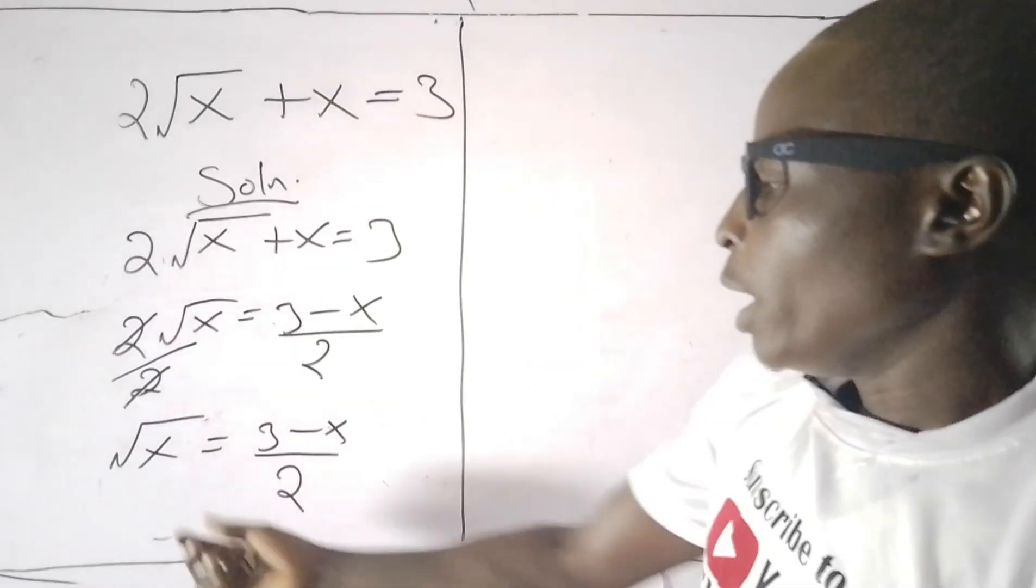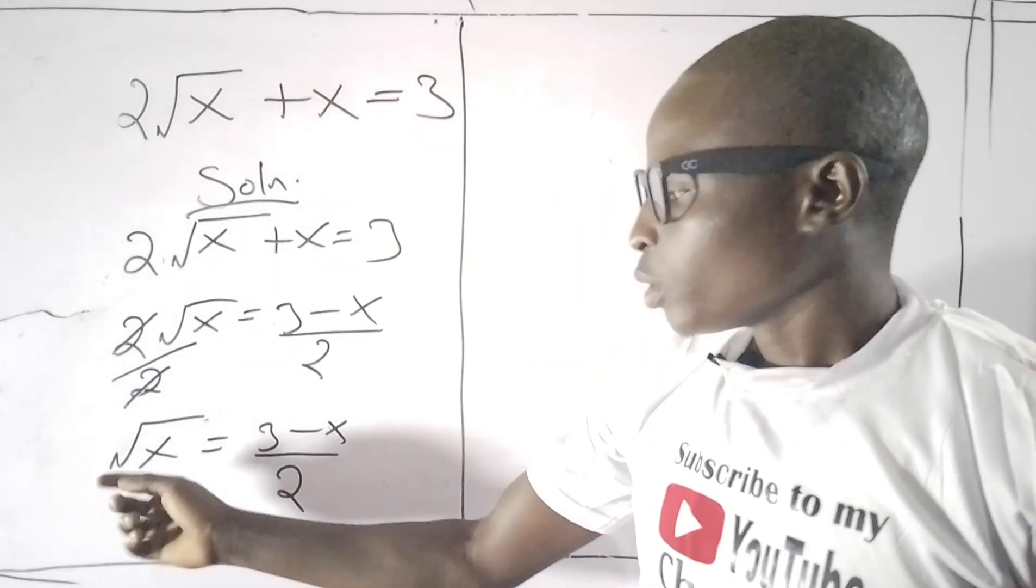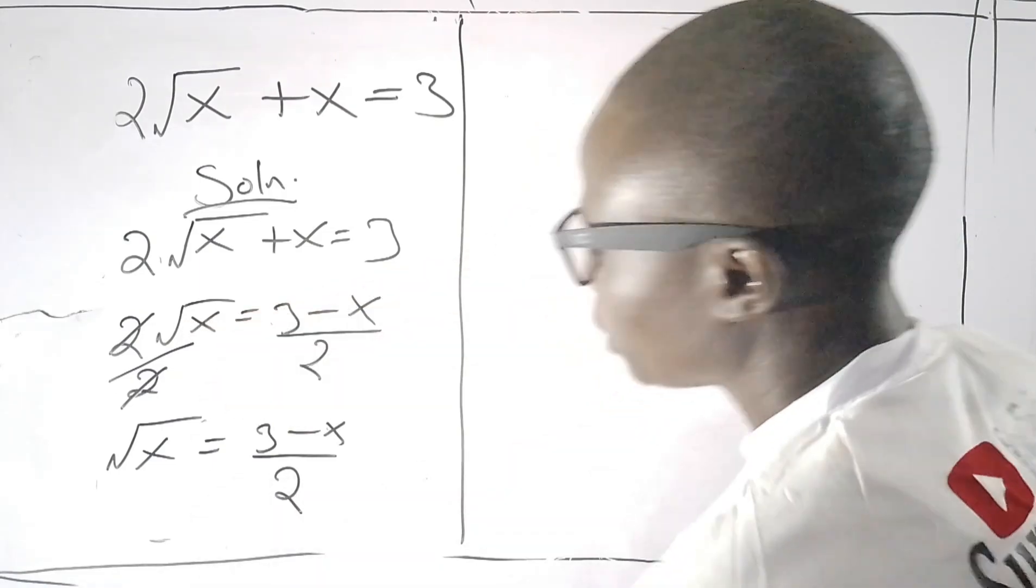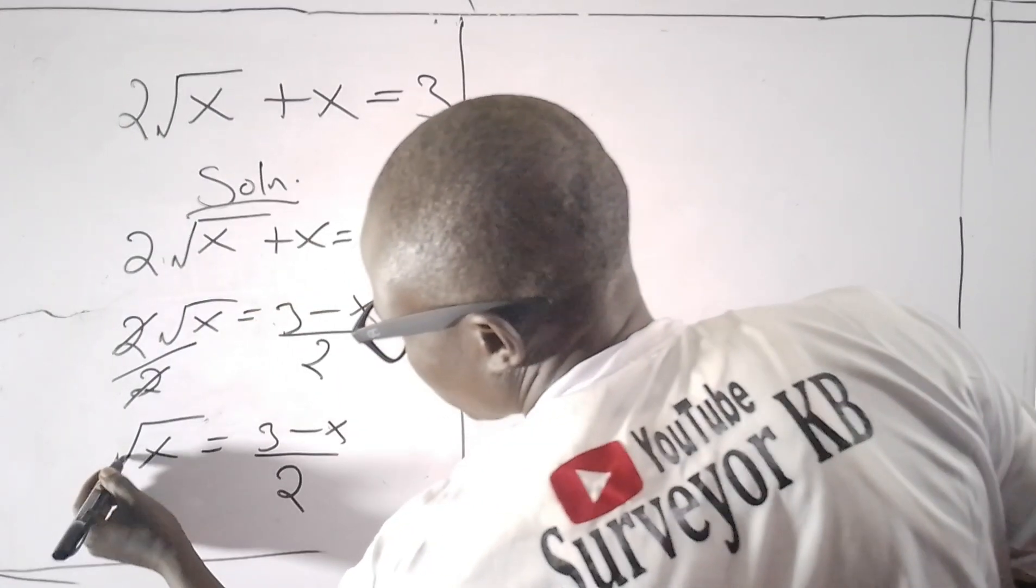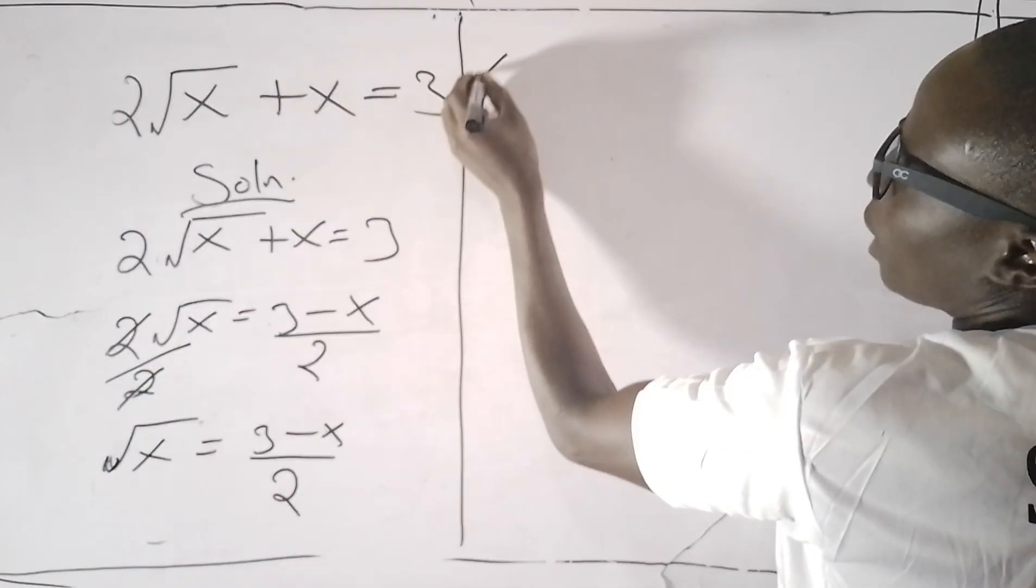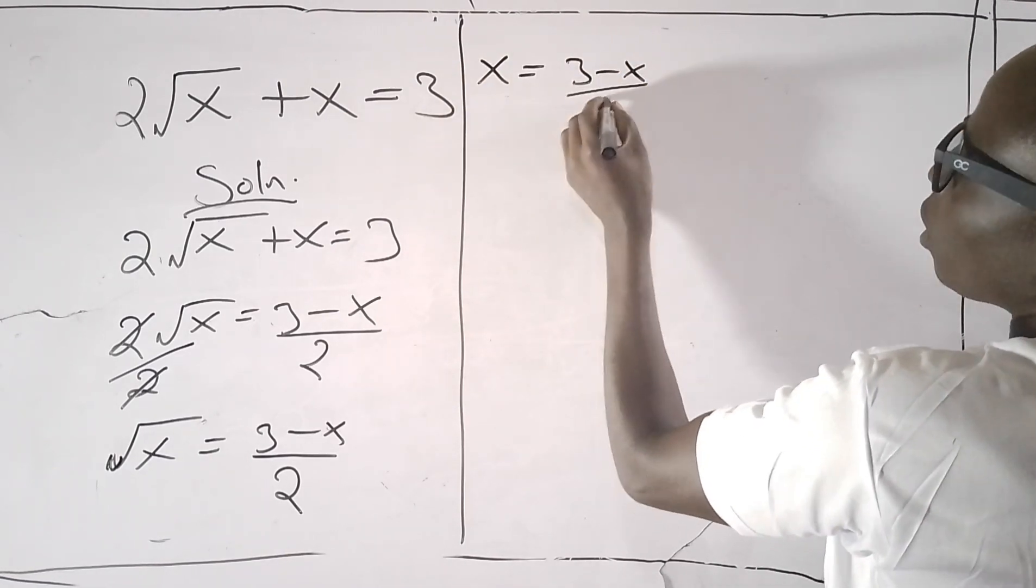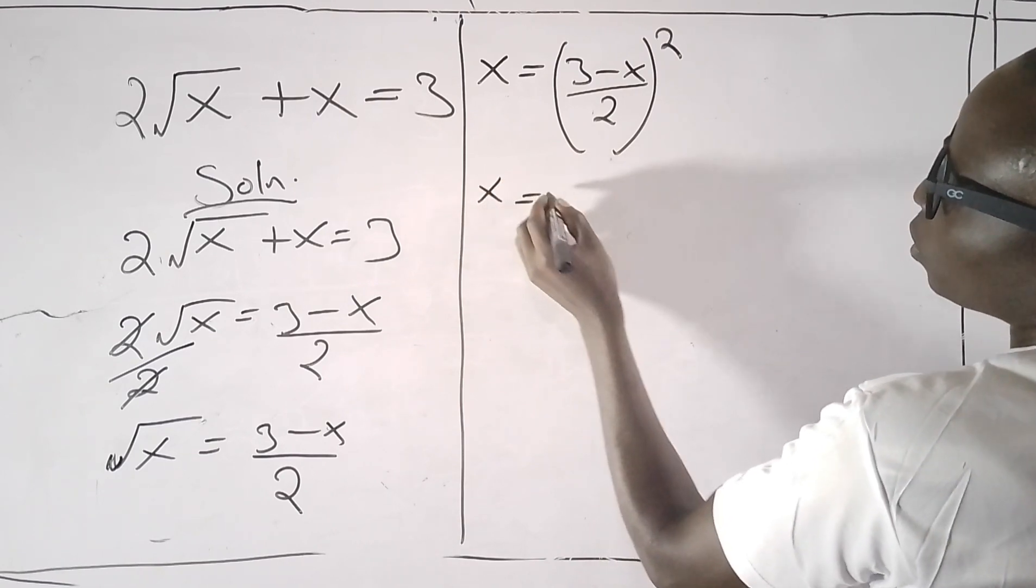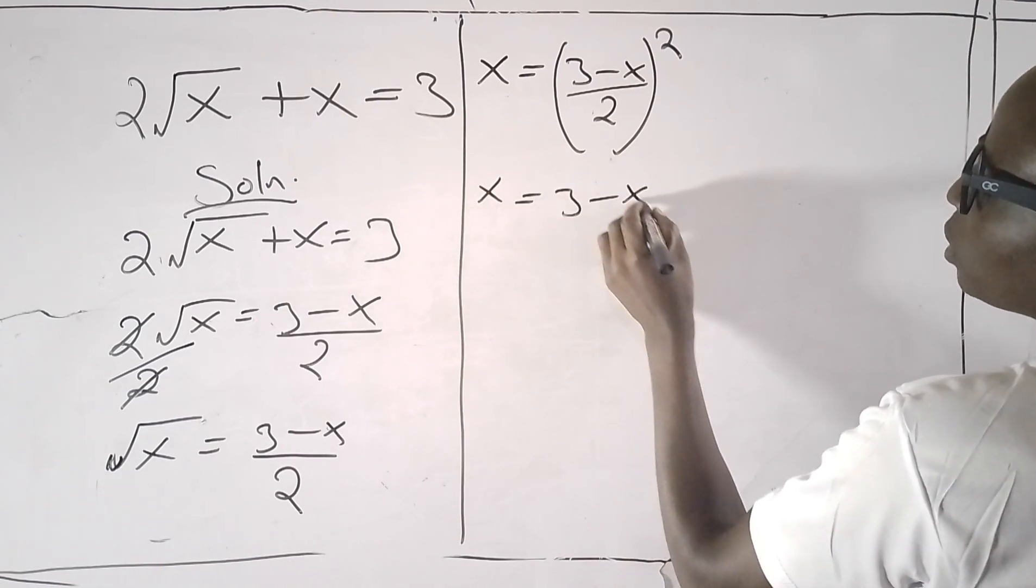I need to clear this square root, so I need to take the square of both sides. So that I have x equals ((3 - x)/2) squared.